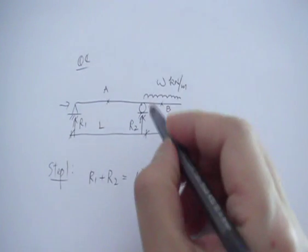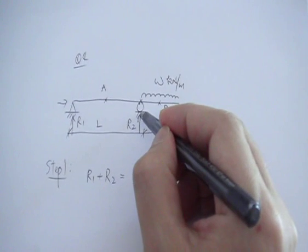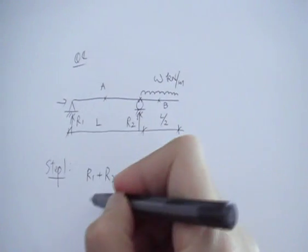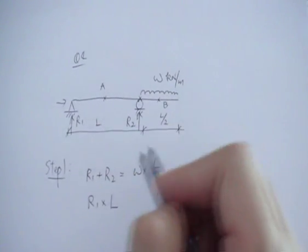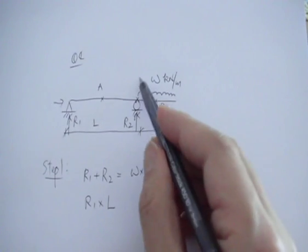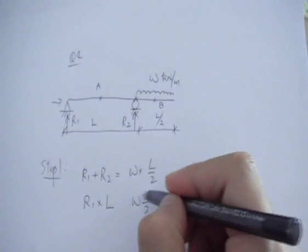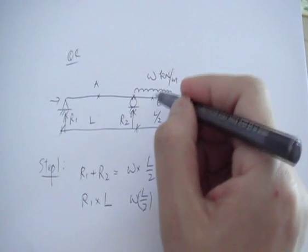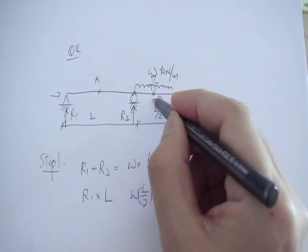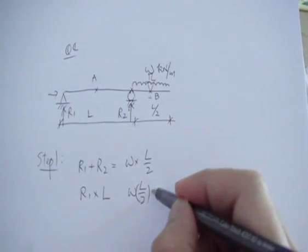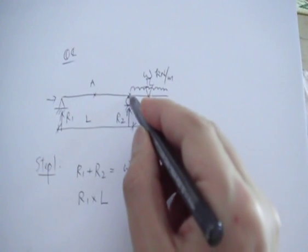Let's take rotation about the right support. R1 times L will give you a clockwise moment. R2 passes through this point so you can ignore it. Then this W times L over 2 — this is the total load acting at the center of the cantilever span, so that's L over 4. So W times L over 4 also gives a clockwise moment about this point.